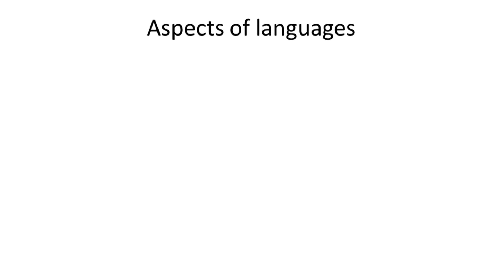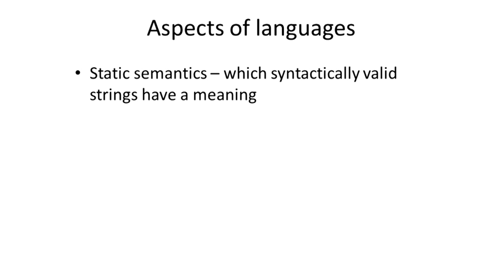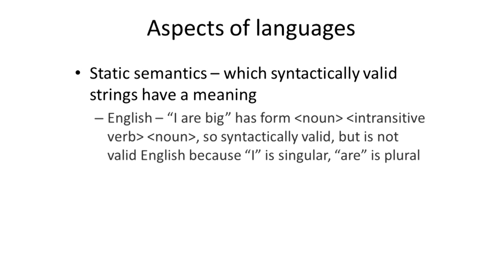In addition to syntax, we also have the semantics of a language, which refers to the meanings associated with expressions. We distinguish two kinds. First, static semantics tells us which syntactically valid strings — sequences of words satisfying the syntax — also have a meaning. In English, 'I R big' has the form of noun, intransitive verb, noun, so it's syntactically valid, but it's not valid English because 'I' is singular and 'R' is plural. This violates the static semantics of English.